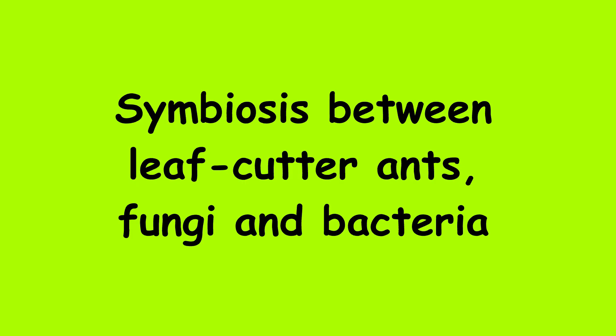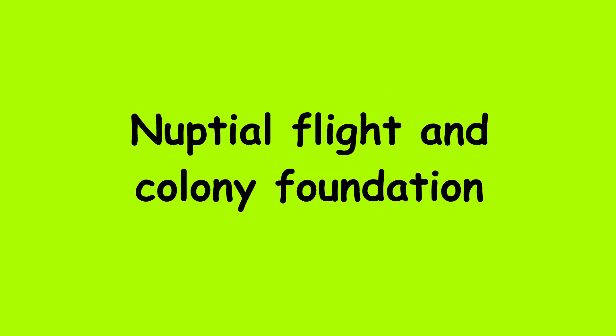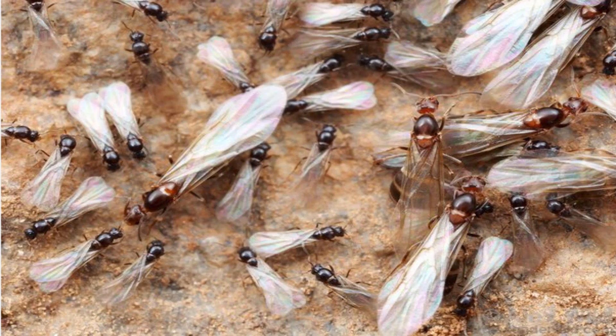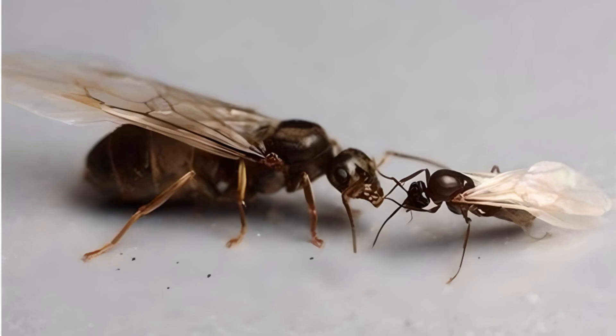Leafcutter ants are leaf-chewing ants belonging to the two genera Atta and Acromyrmex. Winged females and males leave their respective nests en masse and engage in a nuptial flight. Each female mates with multiple males to collect the 300 million sperm she needs to set up a colony. After mating, the males die.